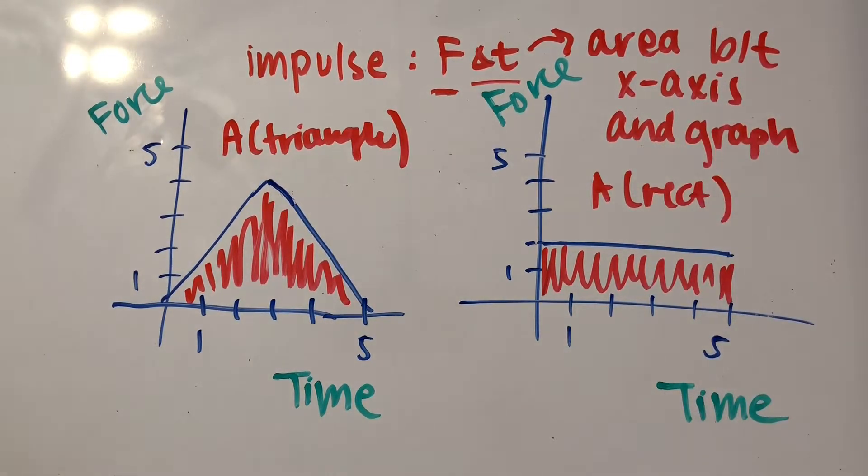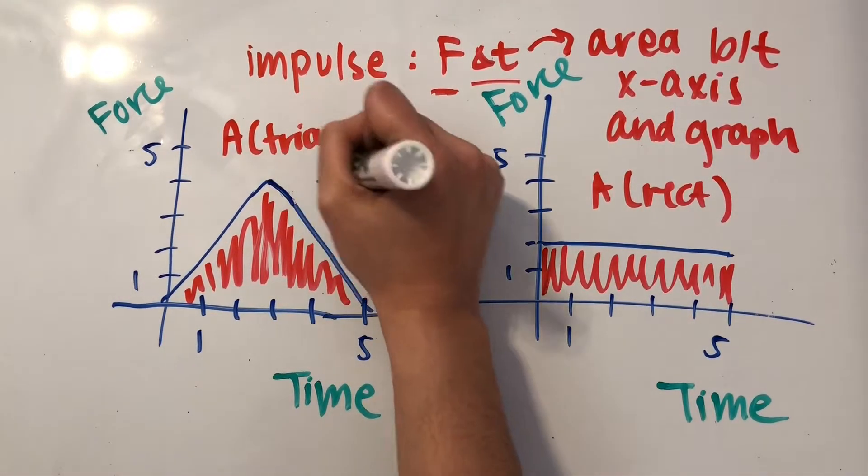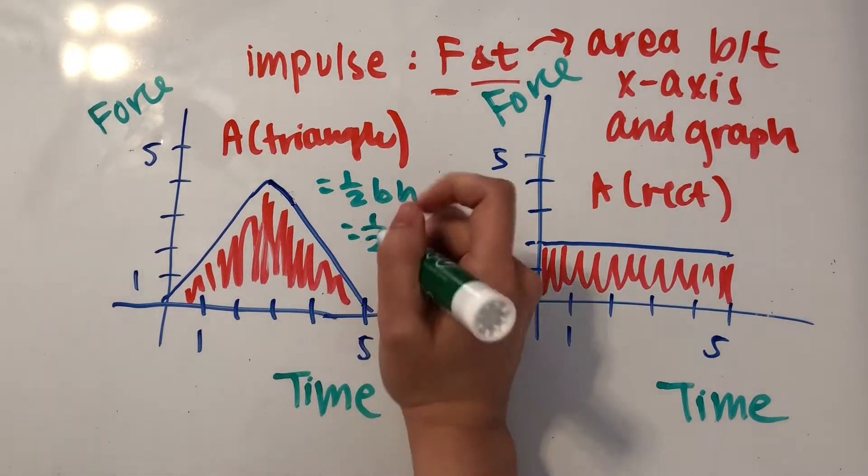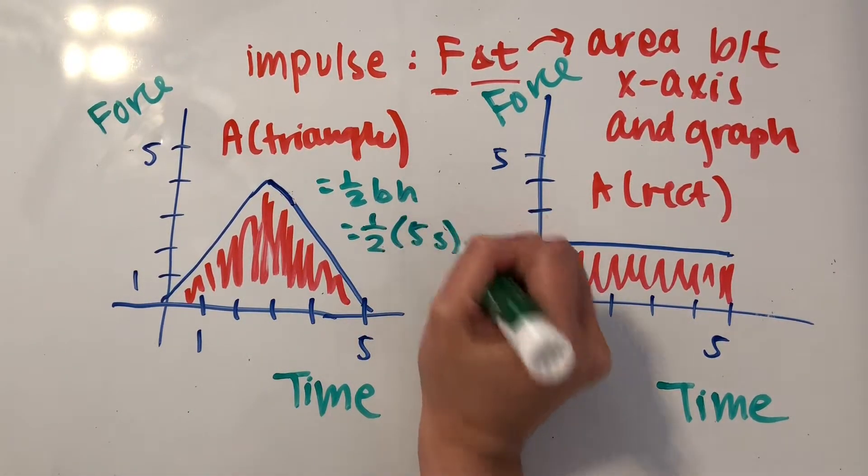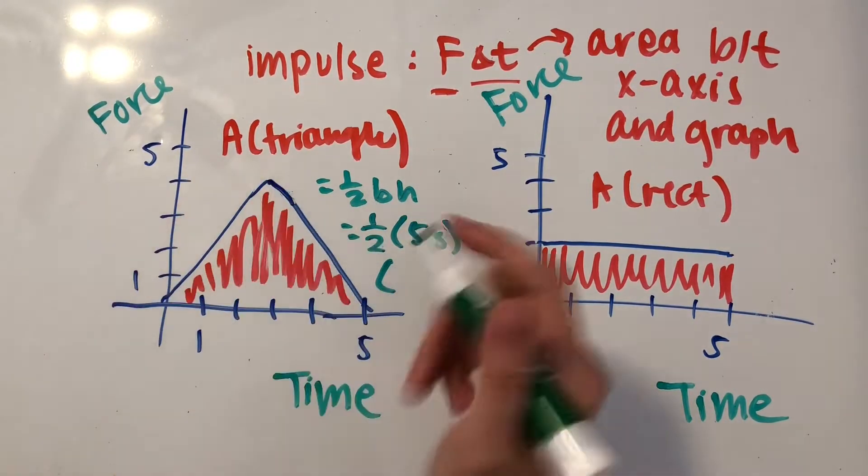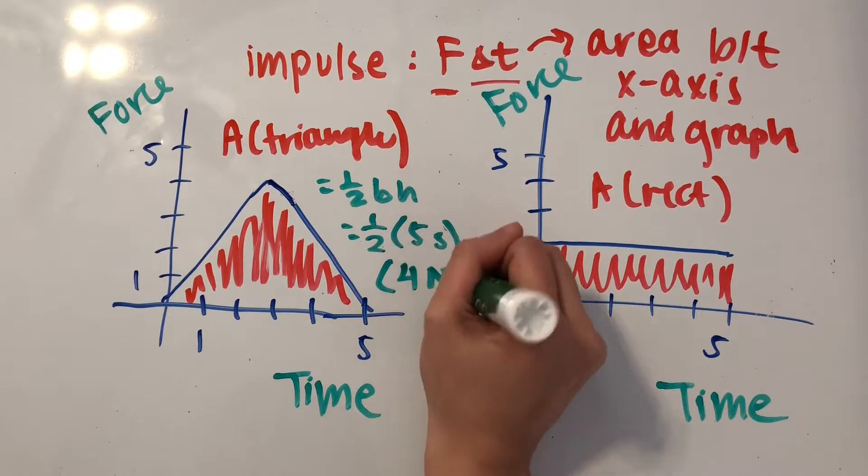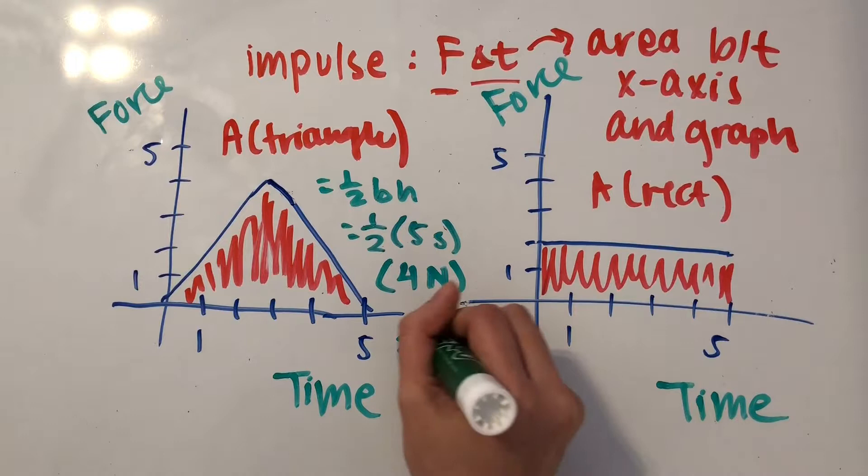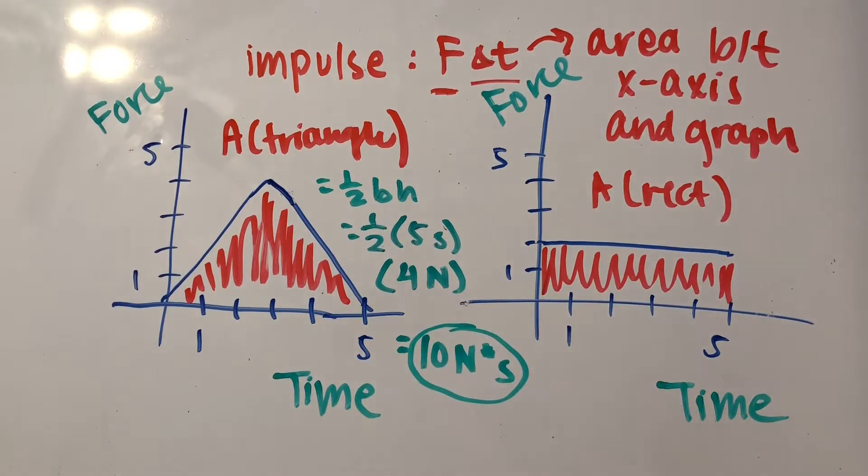And that's pretty easy. So the area of a triangle is equal to one half base times height, which is going to be one half, and the base will be five, so five seconds times the height, which is four newtons, which equals 10 newtons times seconds. And so that's the impulse for the first graph.